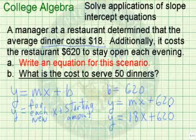Now this makes sense because suppose there were no dinners, it would still cost $620. If we put 0 in for x, 18 times 0 would be 0 plus 620, which equals $620. Suppose they only served one dinner. We would replace x with 1: 18 times 1 plus 620, and we'd wind up with $638.